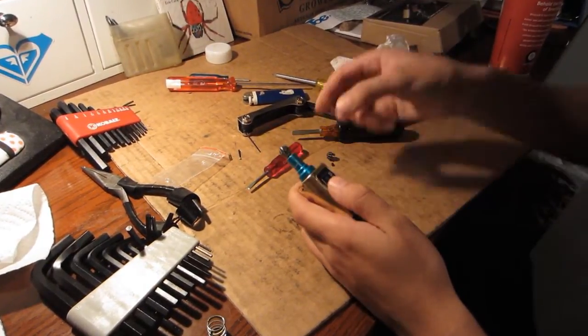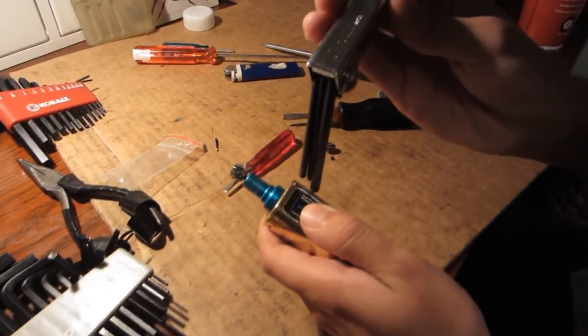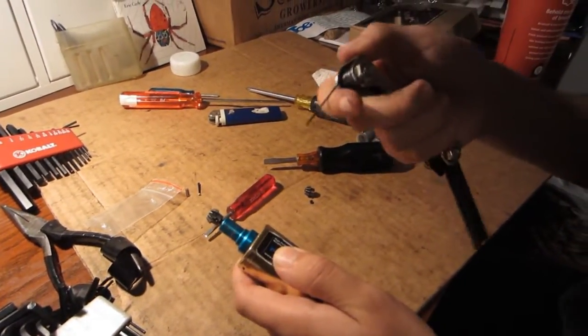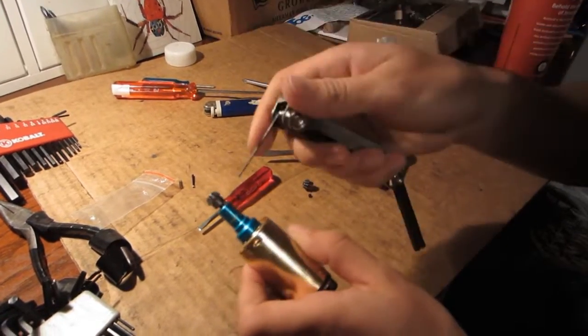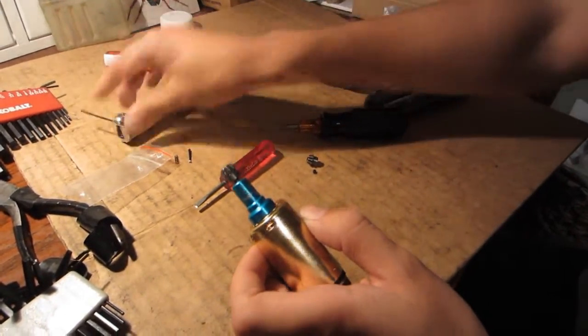The size of the allen key is 0.05, so that's the size you're going to have to use. You can't just go ahead and start unscrewing it. First, you're going to have to heat it.